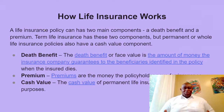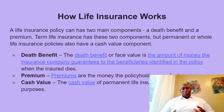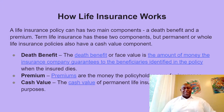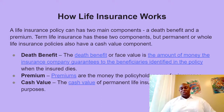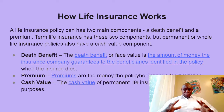How life insurance works — there are different components to it. Life insurance policies can have two main components: the death benefit and the cash accumulation. Term life insurance has the death benefit and a premium, but permanent whole life insurance policies also have a cash value component.